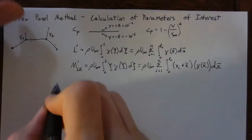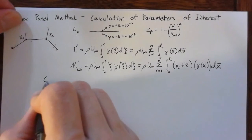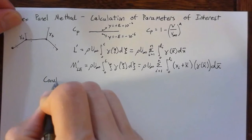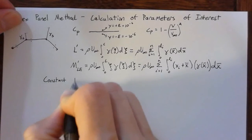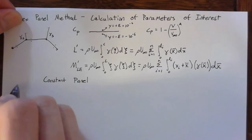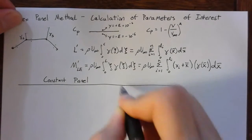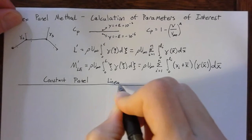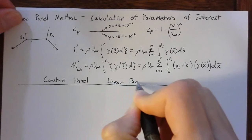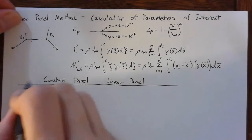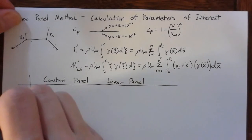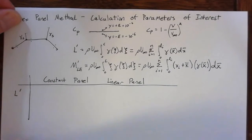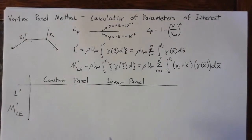So let's look at our constant panel and our linearly varying panel, which I'm just going to shorten to linear panel. And let's look at the lift per unit span and the moment per unit span about the leading edge for the constant and linear panels.